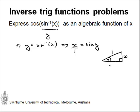This means I can write the third side using the other two sides. According to Pythagoras, this side squared plus this side squared equals this side squared. The side we're after is the square root of 1 minus x squared.